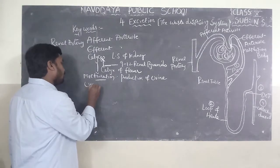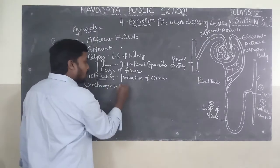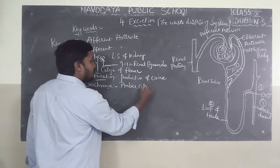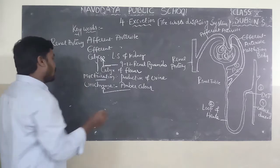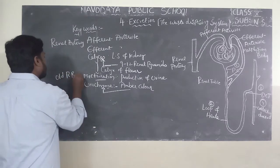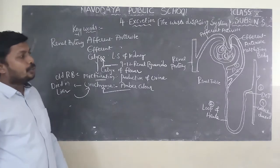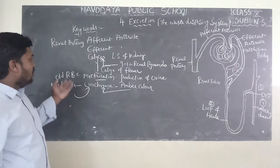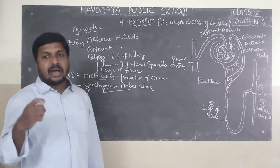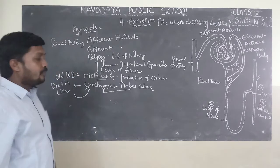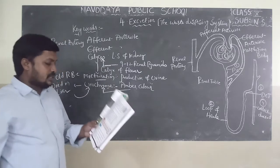Next keyword is urochrome. The color of urine is amber color. This amber color is given by a pigment known as urochrome. Urochrome is produced in the liver when old red blood cells die there. Red blood cells have a lifespan of 120 days. After that, they die in the liver and produce the pigment called urochrome.